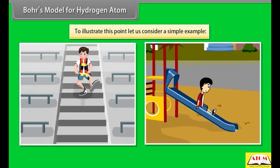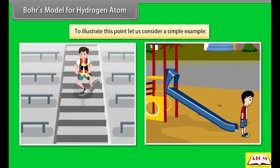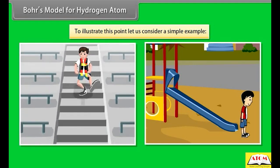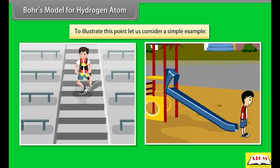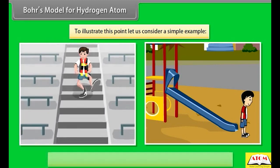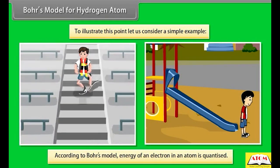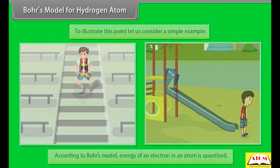On the other hand, if the person moves down a ramp, their energy changes continuously and can have any value corresponding to any point on the ramp — energy in this case is not quantized. So, according to Bohr's model, energy of an electron in an atom is quantized.